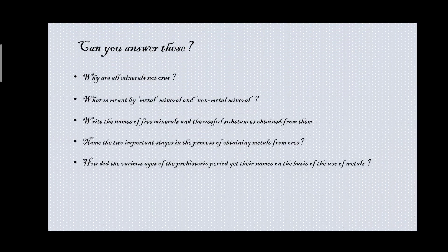Now here are some questions for you. Why are all minerals not ores? What is meant by a metal mineral and a non-metal mineral? Write the names of five minerals and the useful substances obtained from them. Name the two important stages in the process of obtaining metals from ores. How did the various ages of the prehistoric period get their names on the basis of the use of metals? Prepare your answers and put them in the comment section.